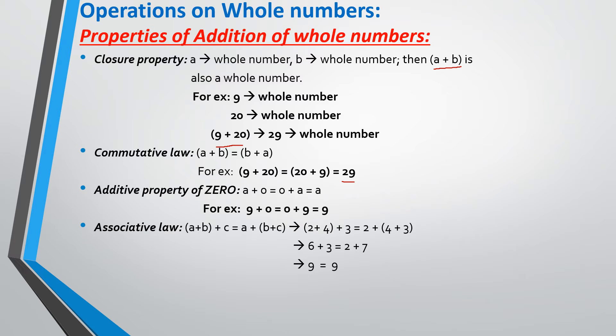The last law is the associative law and it is very helpful in case of adding bigger numbers. When we add 2 or more numbers, this law is very useful. What this law says is: (A plus B) plus C is equal to A plus (B plus C). Only the grouping has been changed — here A and B are grouped together, and here B and C are grouped together. Either way, the answer is going to be the same.